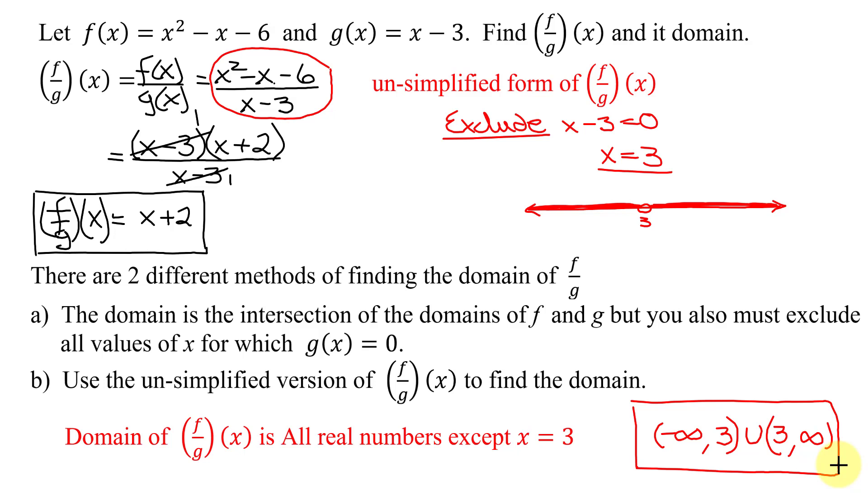One last thing I want to point out is notice it said use the unsimplified version of f divided by g of x. If I'd have used the simplified version here, looking at this expression of x plus 2, it would look like the domain was just all real numbers. But because I reduced these x minus 3s, we wouldn't have seen the problem caused by x equals 3.